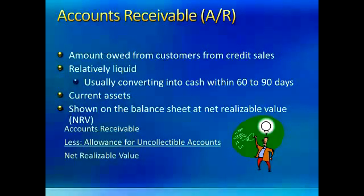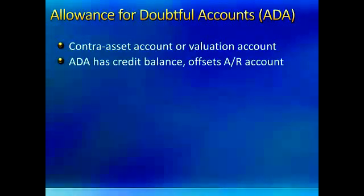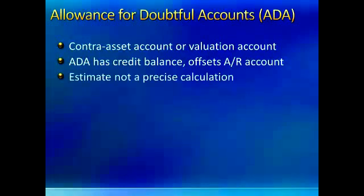In order to do that, we create an account called Allowance for Uncollectable Accounts, also referred to as Allowance for Doubtful Accounts. Accounts Receivable minus the Allowance is equal to the net realizable value. The Allowance for Uncollectable Accounts is an estimate of the amount that we think we won't collect. The Allowance for Doubtful Accounts is a contra asset account, it has a normal credit balance, and it offsets or reduces Accounts Receivable. It's an estimate and not a precise calculation.